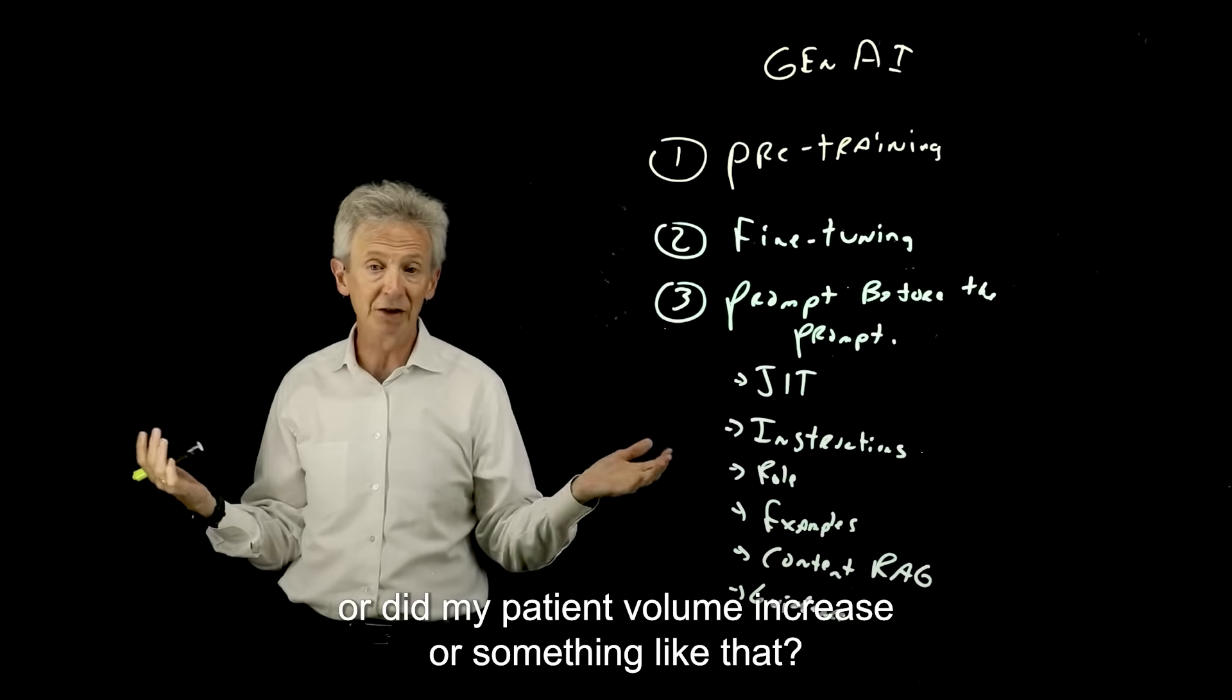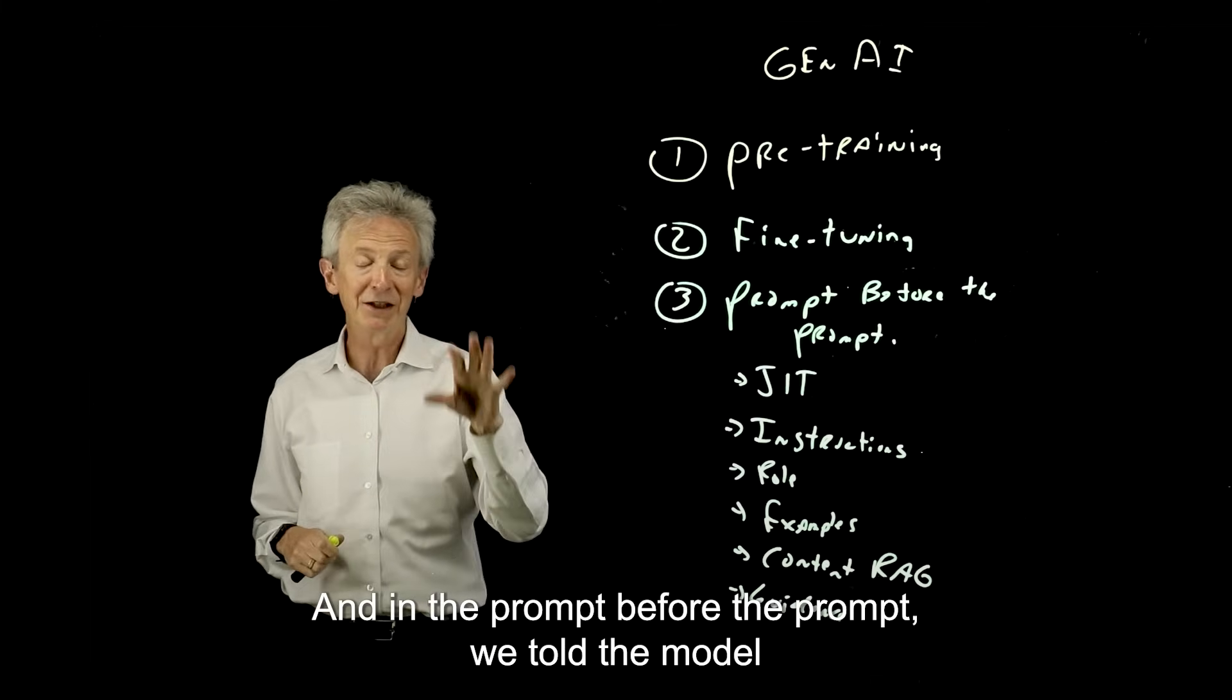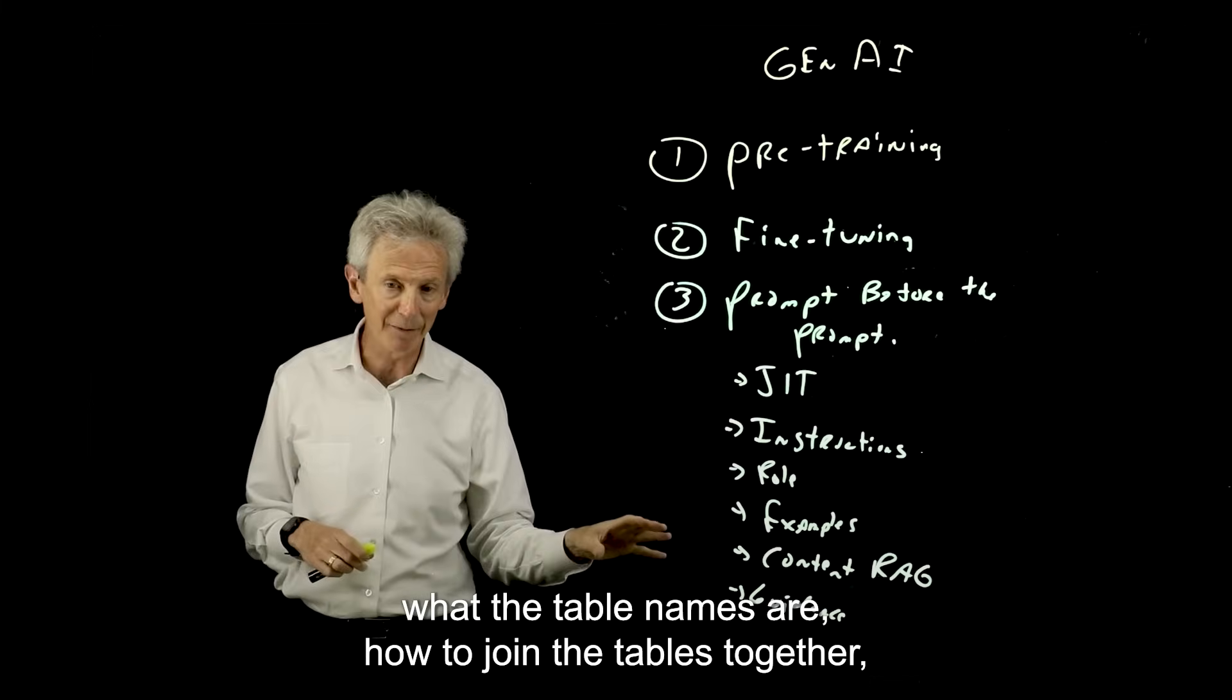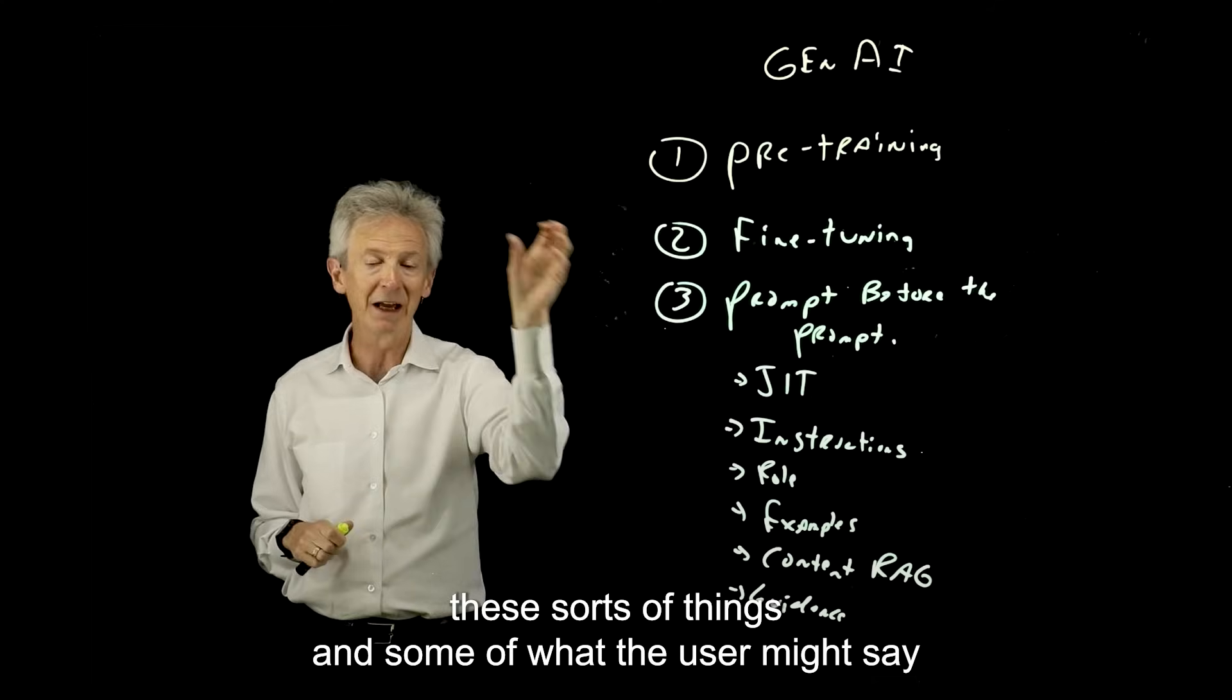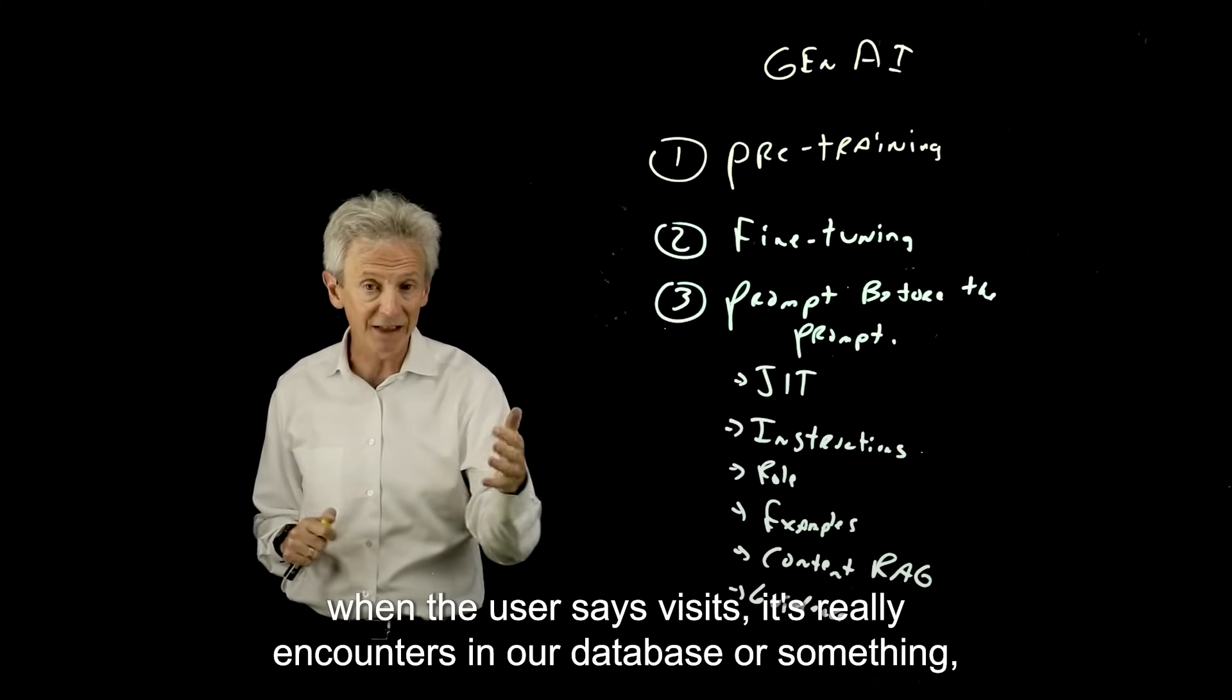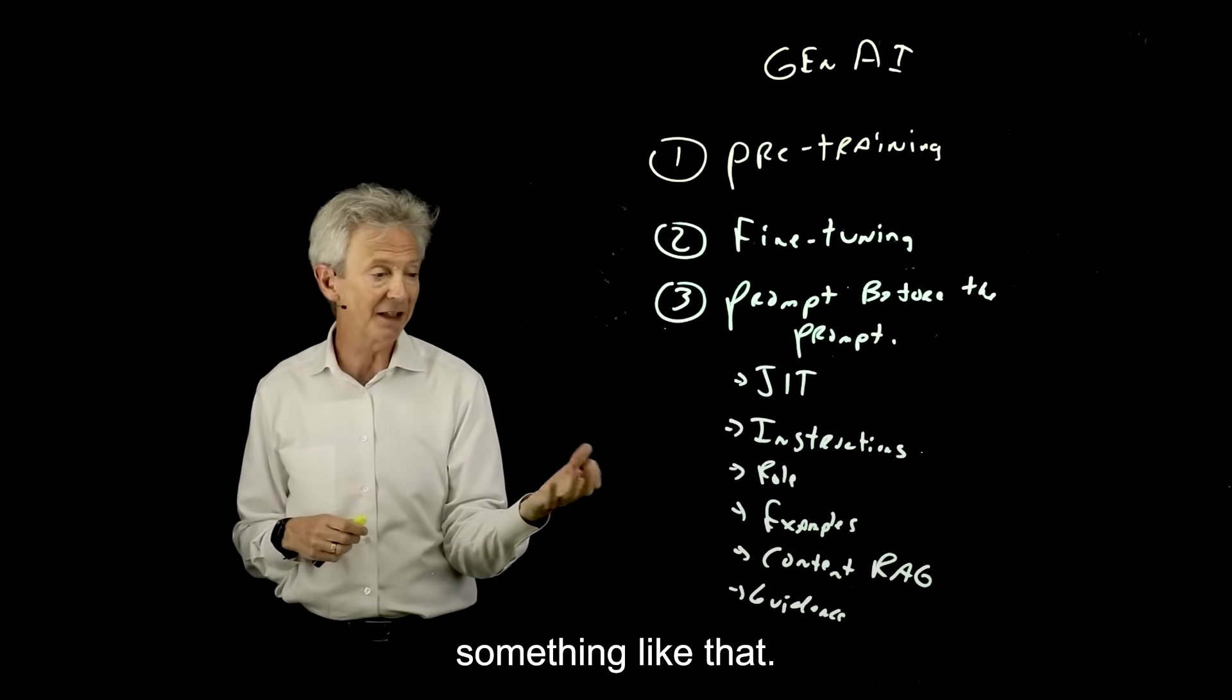And in the prompt before the prompt, we told the model what the table names are, how to join the tables together, these sorts of things, and some of what the user might say. When the user says visits, it's really encounters in our database or something like that.